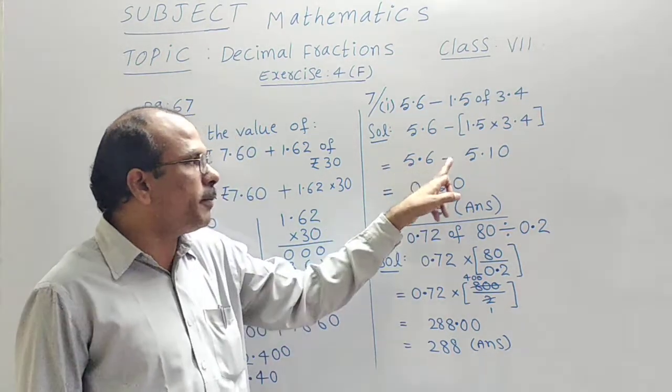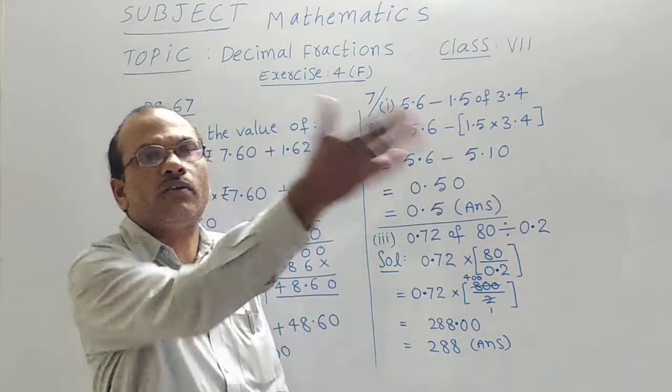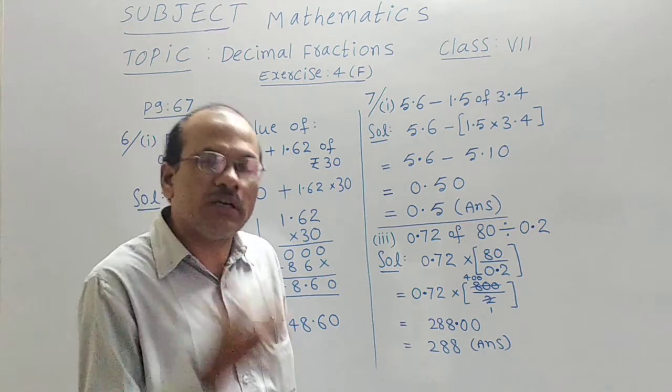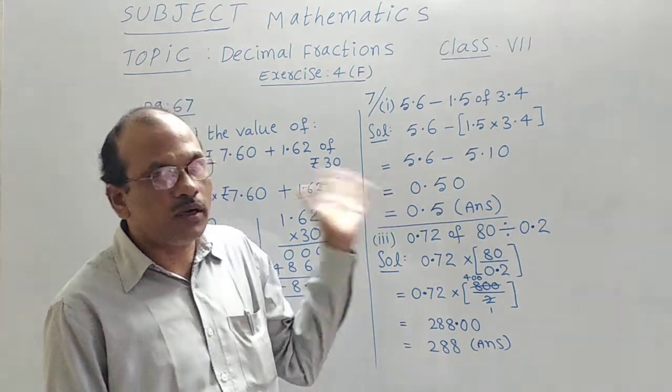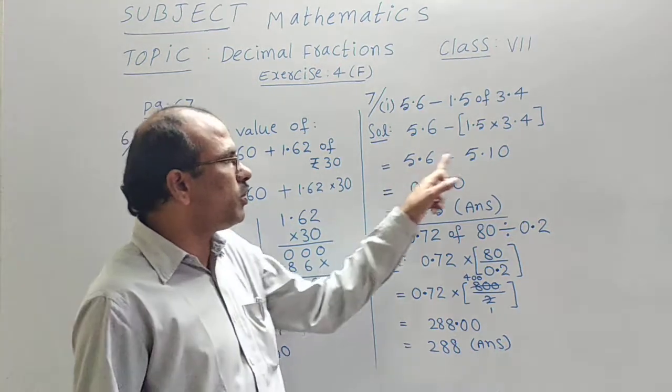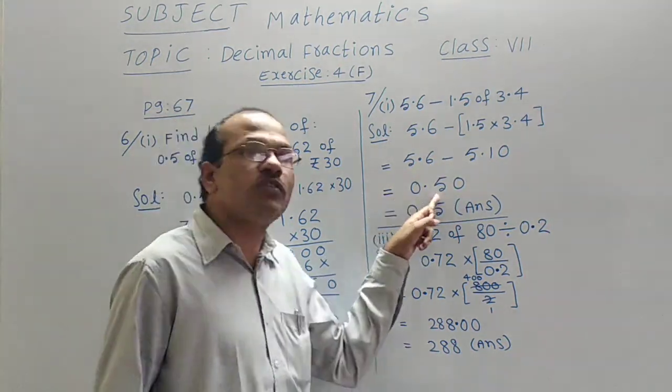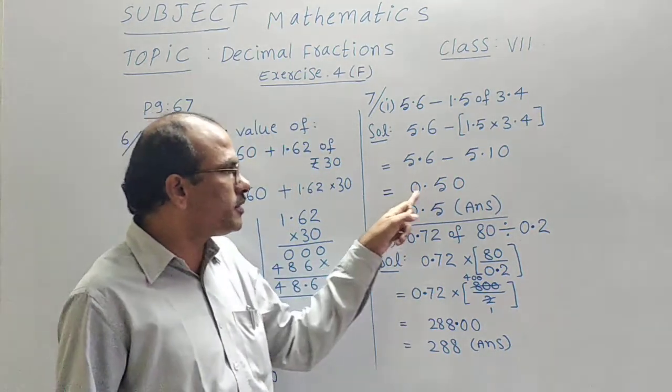Finally we have to subtract 5.6 minus 5.10. We know how to subtract. We have done the subtractions, additions of the decimal numbers in the previous exercises. So if you do in the rough, we have to do subtraction. You will get 0.50.